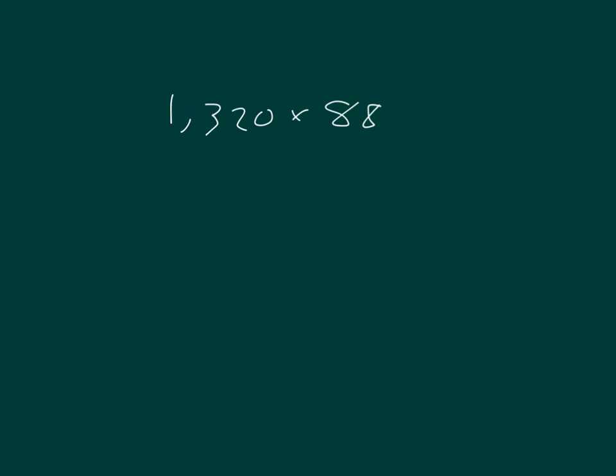Let's go ahead and round here. 1,320, that is close to 1,300. And 88 is close to 90. I can multiply out 13 times 9 and then look at thousands.